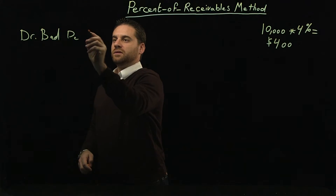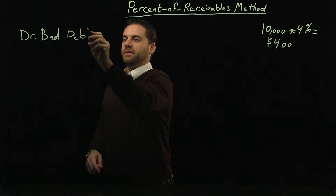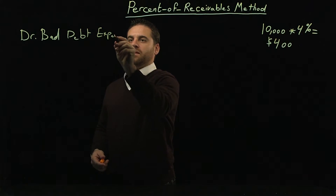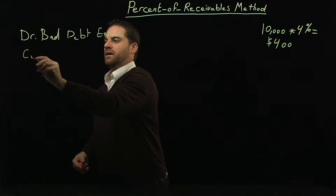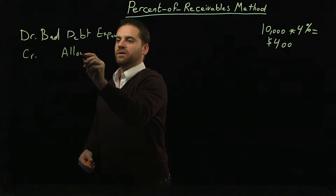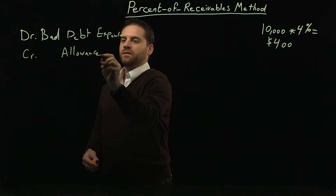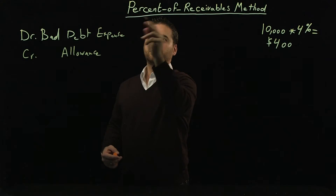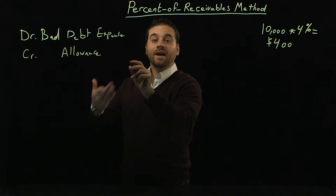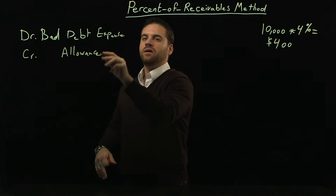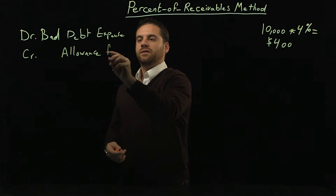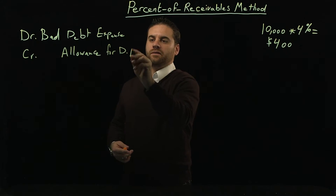Let me write down the journal before we find out what the exact amount is. Bad debt expense — and then the credit will be allowance for doubtful account, just like we did in the previous video. The only difference between the two methods is the calculation to find the amount; it's not how the journal entry looks. It's just the amount that we calculate for allowance for doubtful account.